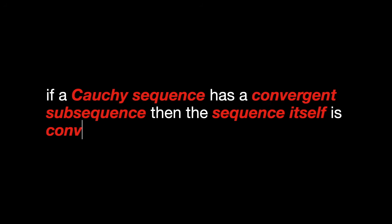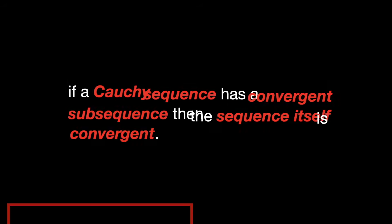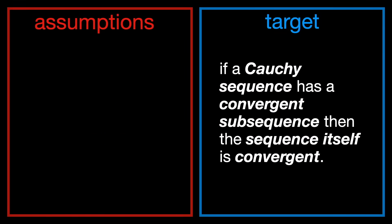Let's prove that if a Cauchy sequence has a convergent subsequence, then the sequence itself is convergent. As of this moment right now, we have nothing that we might want to use, but we do have our target, the statement we want to prove.